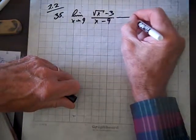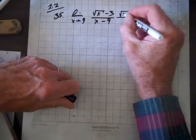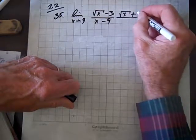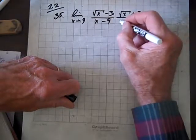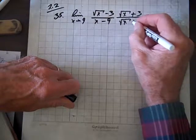Here's how you do these problems. You look at the numerator, you employ the concept of the difference of two squares, and multiply it by 1 in the form of the conjugate of the numerator.